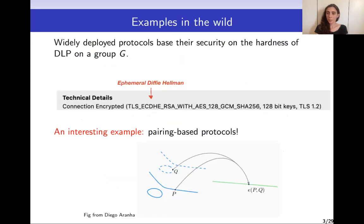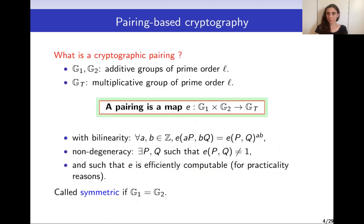DLP is used in protocols that are widely deployed, such as the Ephemeral Diffie-Hellman protocol, which is present for example in the TLS handshake. Another interesting example which we're going to focus on is pairing-based protocols.